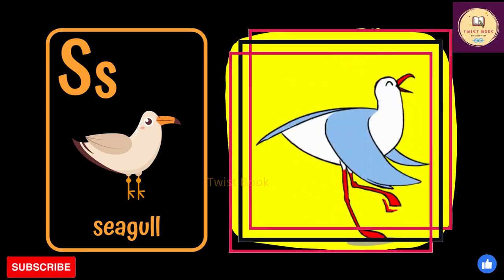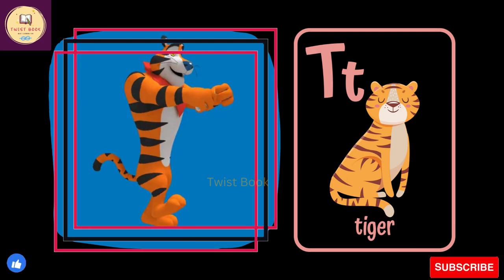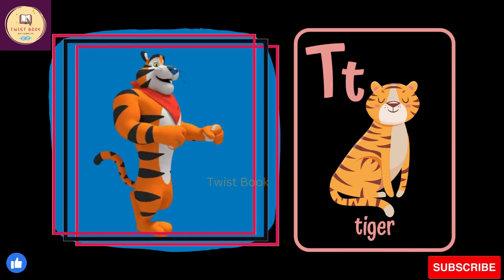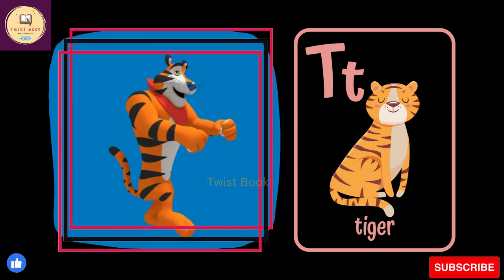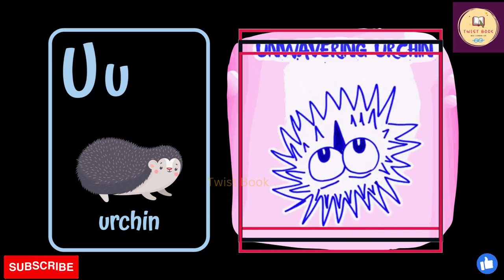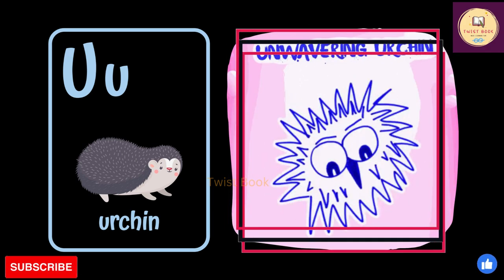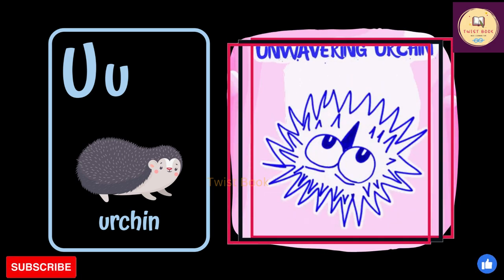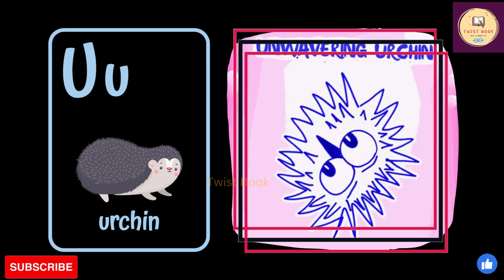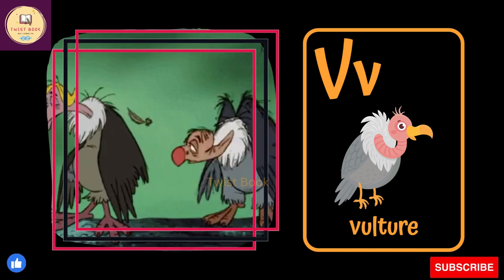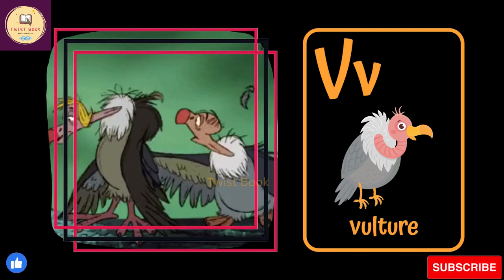T for Tiger, U for Urchin, V for Vulture.